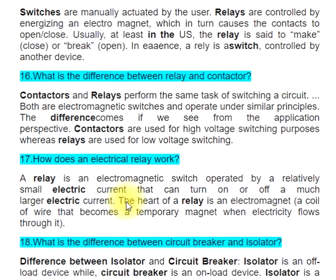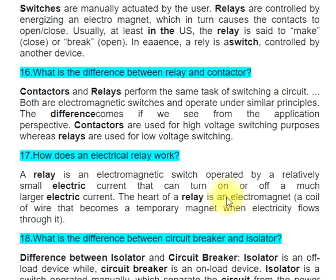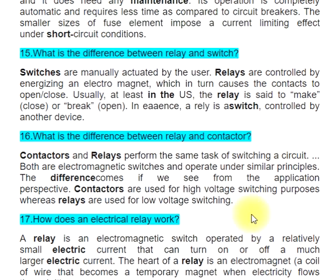Question 17: How does an electrical relay work? A relay is an electromagnetic switch operated by a relatively small electric current that can turn on or off a much larger electric current. The heart of a relay is an electromagnet — a coil of wire that becomes a temporary magnet when electricity flows through it.